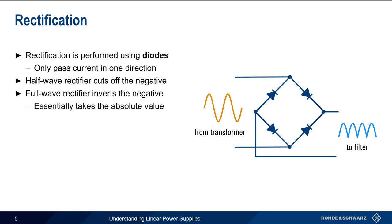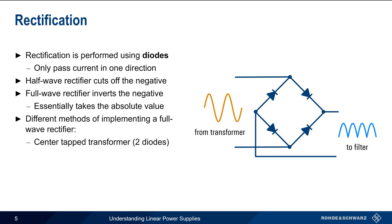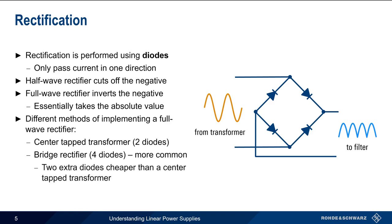There are different ways of implementing a full-wave rectifier, such as center tapping a transformer and using only a pair of diodes, but the four-diode bridge rectifier shown in this illustration is the more common approach in linear power supplies, in part because the two extra diodes in a bridge rectifier tend to be cheaper than using a center tap transformer.